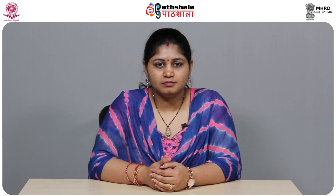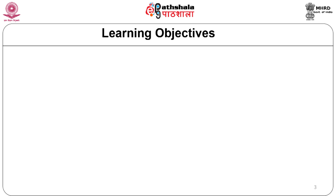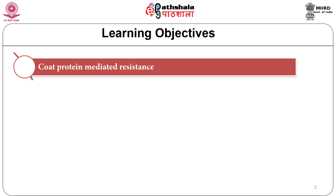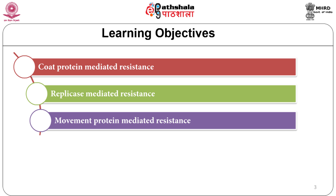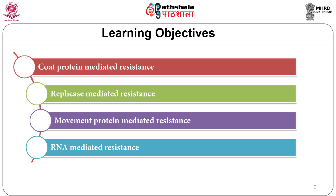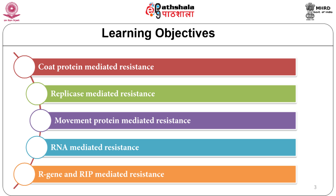The learning objectives are to understand the transgenic approaches used for induction of viral resistance. These include coat protein-mediated resistance, replicase-mediated resistance, movement protein-mediated resistance, and RNA-mediated resistance, as well as the use of plant defense genes for inducing virus resistance — namely the R genes, or ribosomal inactivating protein coding genes.